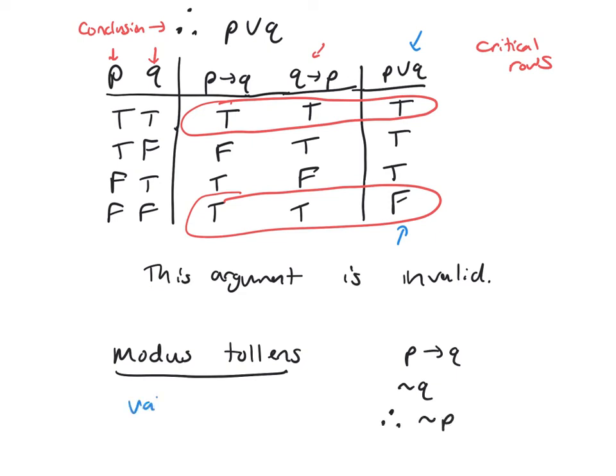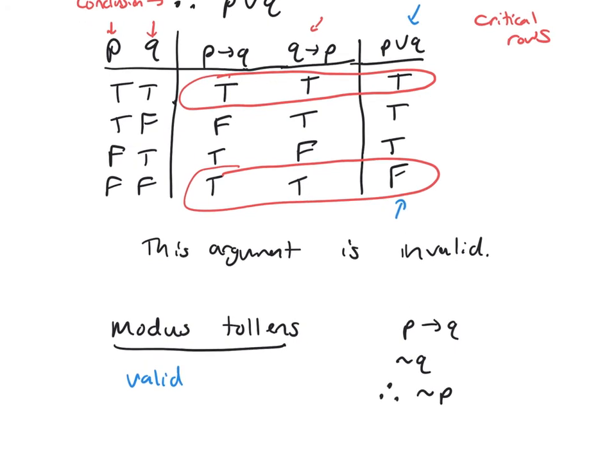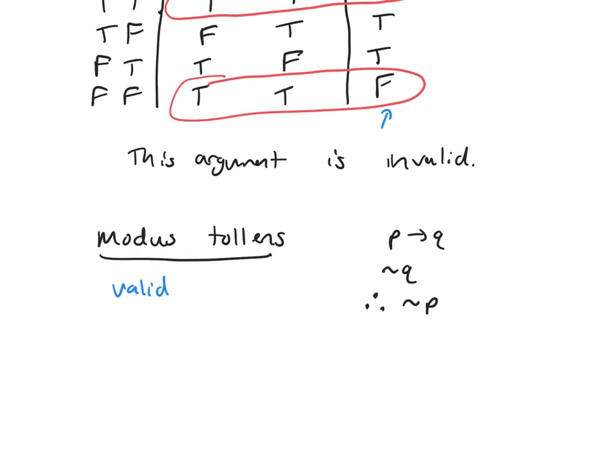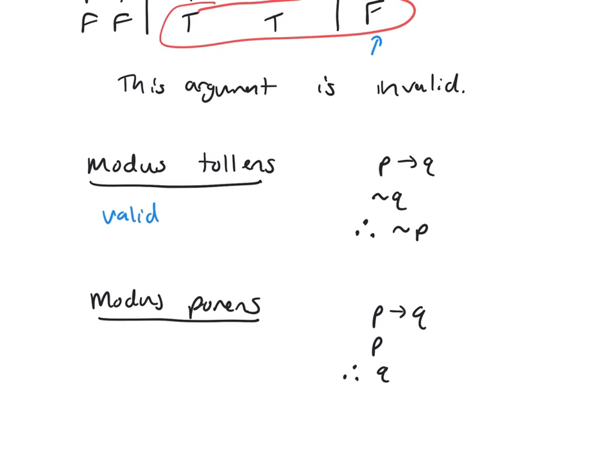We had modus tollens, which had the form if P then Q, not P, therefore not Q. This one was also valid.